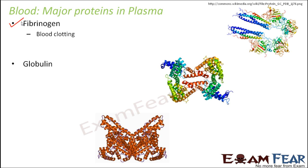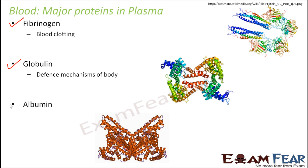Another important protein in plasma is globulin, and this protein helps in the defense mechanism of the body — that is, it helps the body to fight against infections, protecting our body. A third important protein in plasma is albumin, which helps to maintain the osmotic balance. It maintains the water balance, ensuring the right amount of water is present in each and every part of our body.